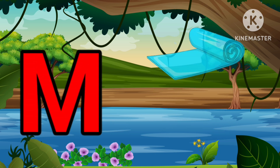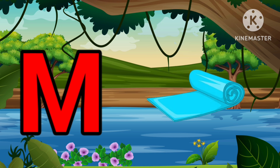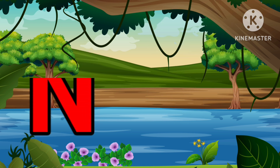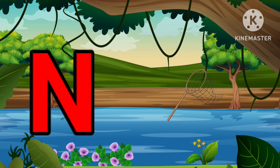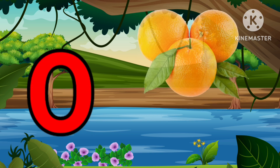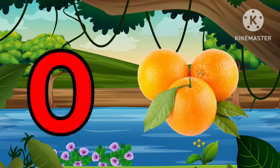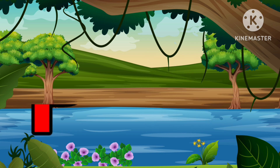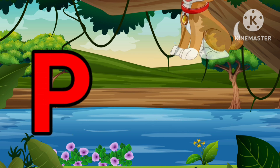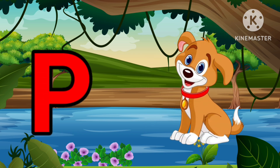M is for Mat, M-M-Mat. N is for Net, N-N-Net. O is for Orange, O-O-Orange. P is for Pet, P-P-Pet.